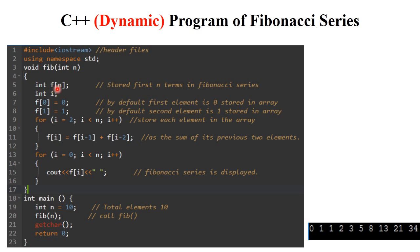One variable integer i is declared to index each element. f[0] is set to 0 and f[1] is set to 1. Arrays always start with the 0th location. The first two elements are constant in the Fibonacci series — f[0] equals 0 at the 0th location, and f[1] equals 1 at the 1st location. These are stored in the array by default.